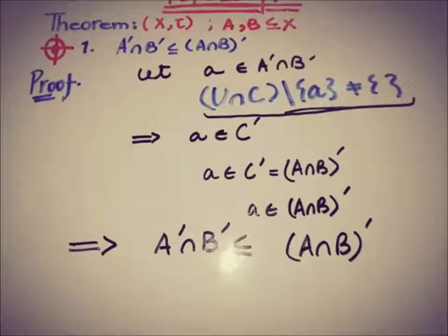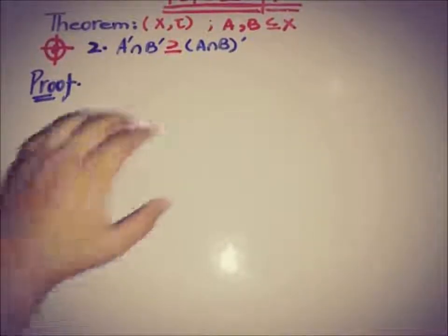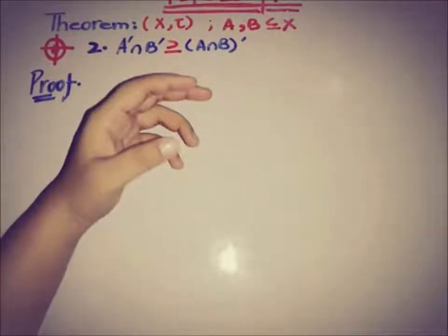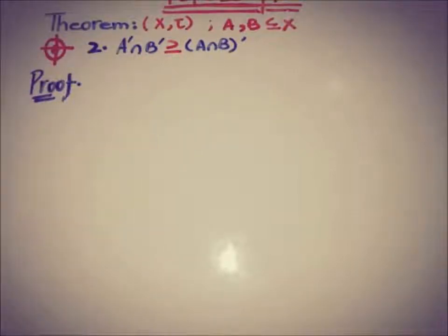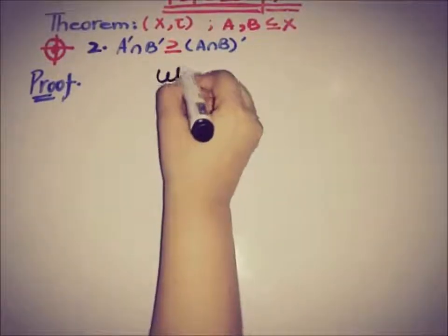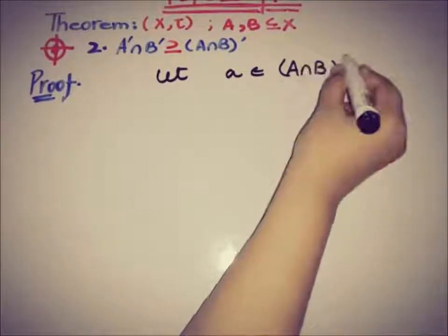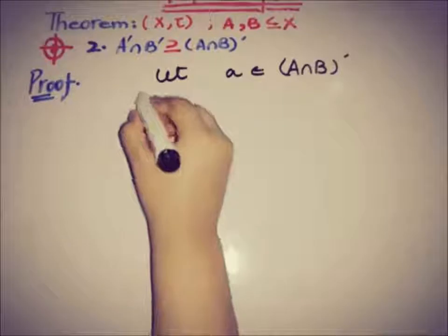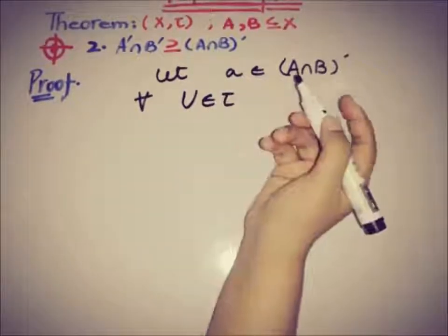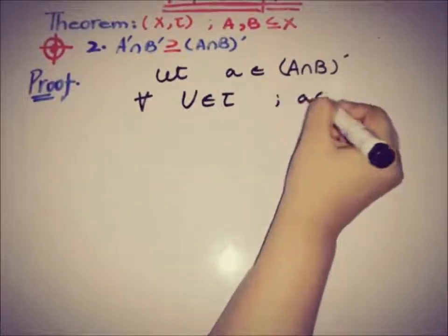So the first part is proved using the definition of the accumulation set. Now we will prove the second part: that (A ∩ B)' is a subset of A' ∩ B'. Let a be a member of (A ∩ B)'. We will use the definition of the accumulation set: for every open set U containing a, U ∩ (A ∩ B) \ {a} ≠ ∅.